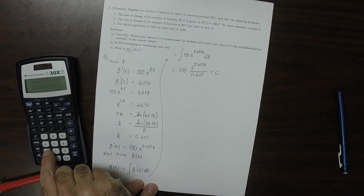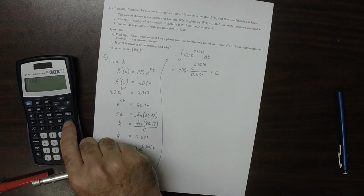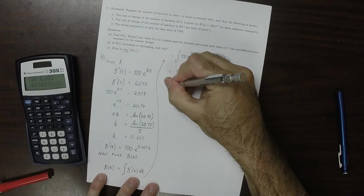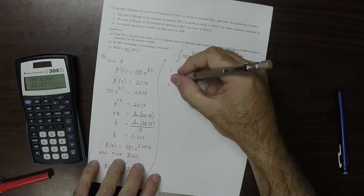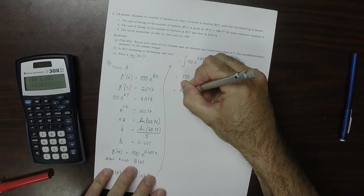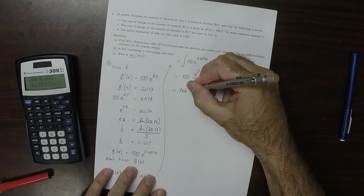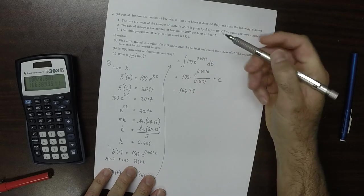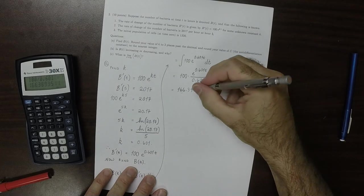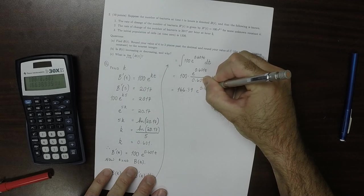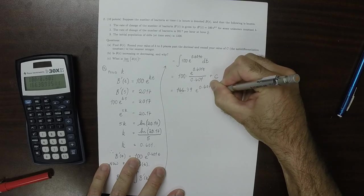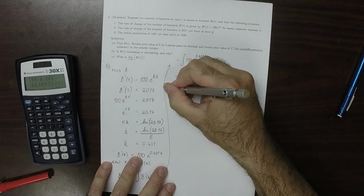So then simplifying that a little bit, 100 divided by 0.601. So that gives us equal to 166.39, just using several places because I can see that I'm supposed to solve for c to the nearest integer, so that'll be enough to get there. And then exponential 0.601t plus a constant. So that is b(t).